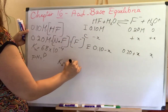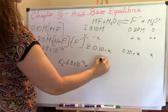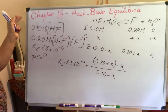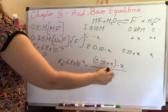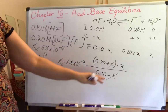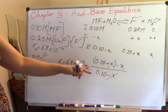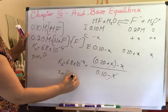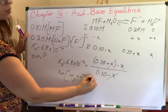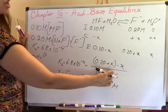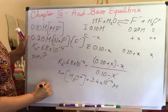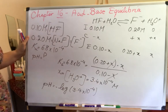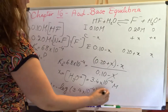Ka = 6.8×10⁻⁴ = (0.20 + x)(x) / (0.10 − x). Making the assumption and ignoring x, x = [H₃O⁺] = 3.4×10⁻⁴ molar. Checking confirms the assumption is valid. Therefore pH = −log(3.4×10⁻⁴) = 3.47. The key difference from previous calculations is that the anion starts with a non-zero initial value due to the common ion from NaF.